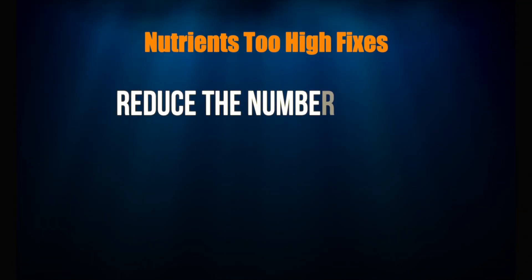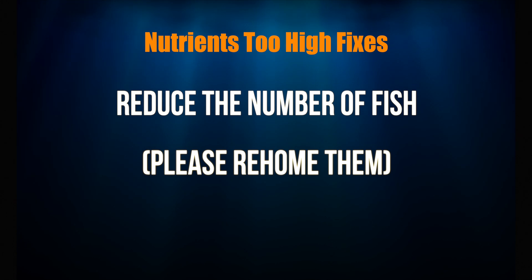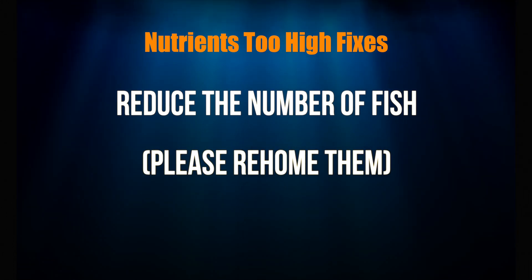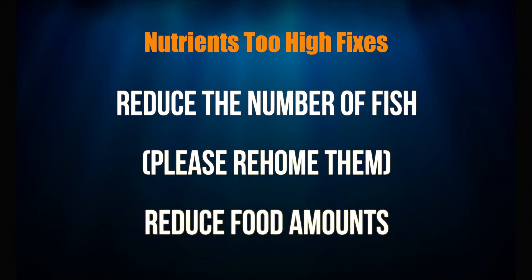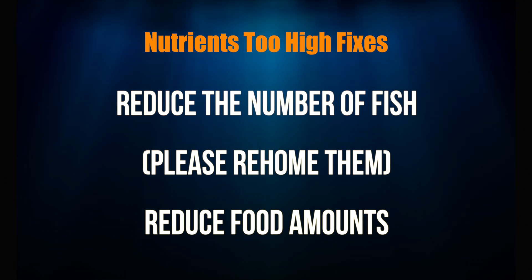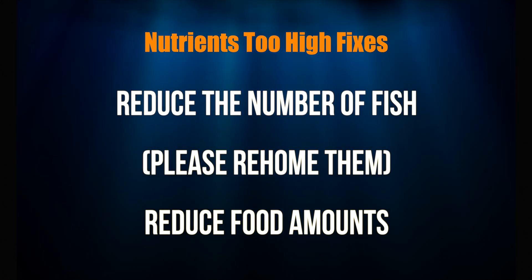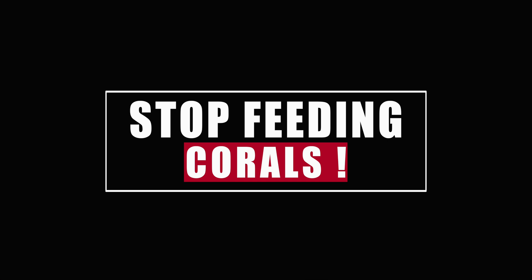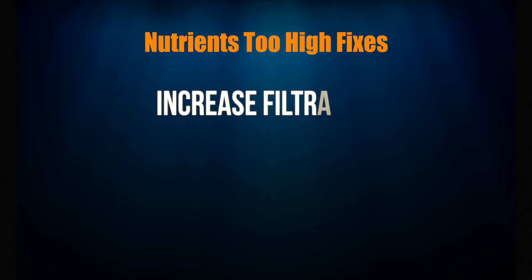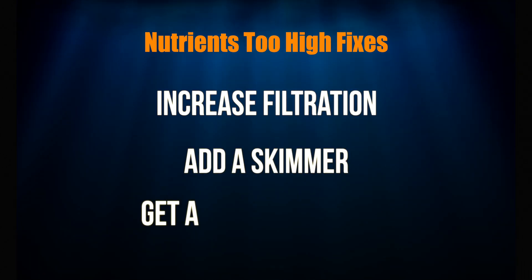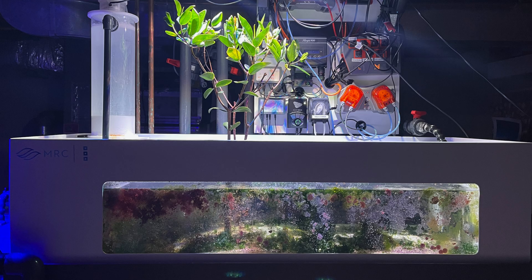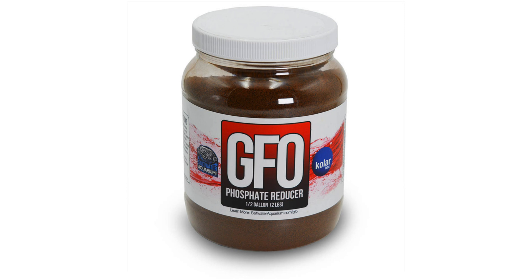To lower high nutrients, reduce the number of fish — please find them good homes, don't just flush them. Reduce the amount of food you feed your fish; chances are you're already overfeeding, so cutting back even 10% isn't going to hurt. Stop feeding corals — unless they're non-photosynthetic, they don't need to be fed. Increase filtration: add a protein skimmer if you don't have one, get a better one if you do. Add a refugium, or add phosphate-removal media like GFO.